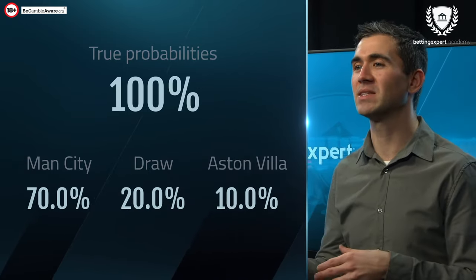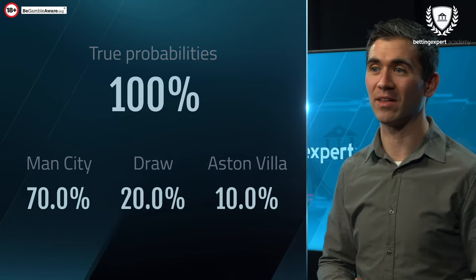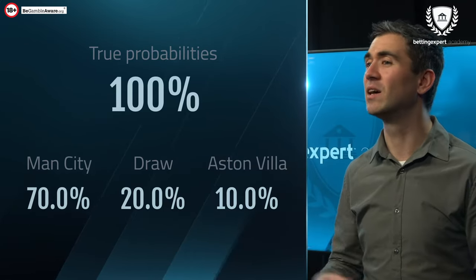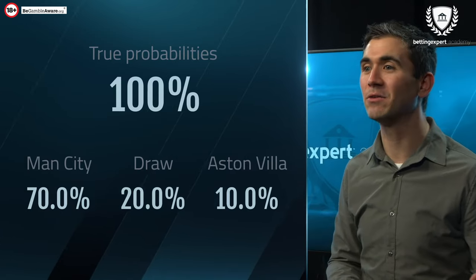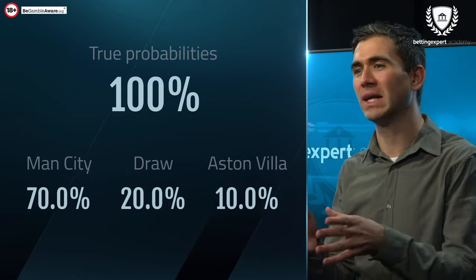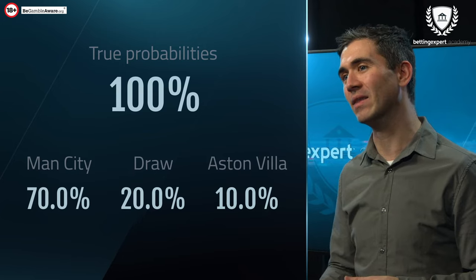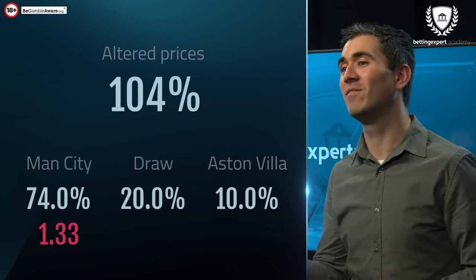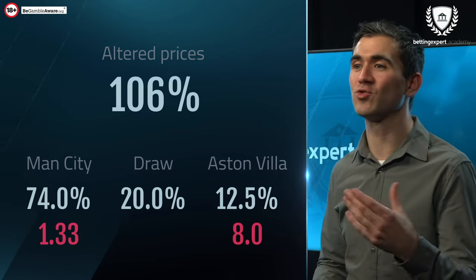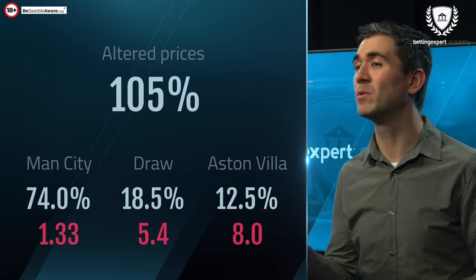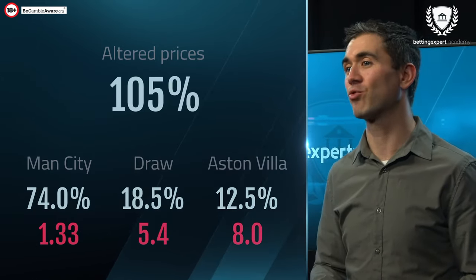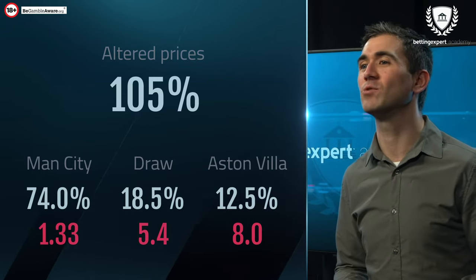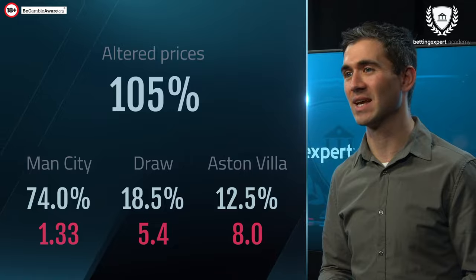Now the bookmaker knows that Man City are actually in pretty decent form, they've been playing a lot better lately than previously, and also Villa's squad has been struck by illness, so they can expect a lot more money to be placed on a home win. The bookmaker then priced Man City at 1.33, Villa at 8.0, and the draw at 5.4, and would still expect to make a profit long term, as adding up the implied probabilities results in 105%.